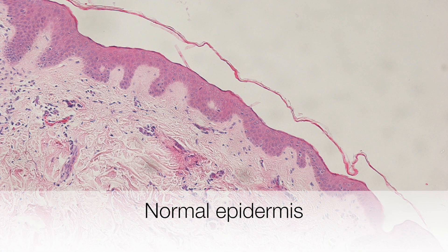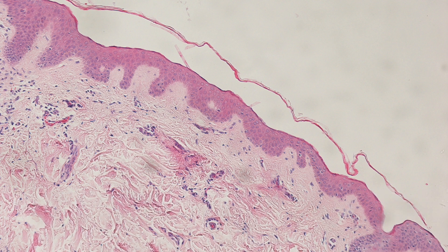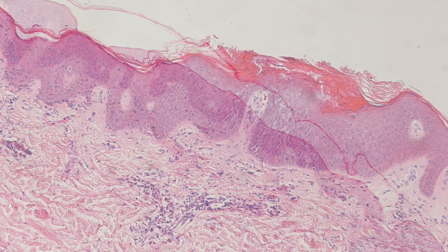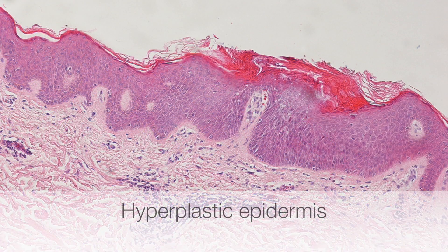This shows the epidermis at the edge of the biopsy away from the granular cell tumour, and the epidermis is thin and appears normal. But if we look at the epidermis directly above the granular cell tumour, it is clearly thickened and hyperplastic.